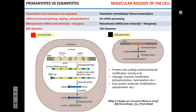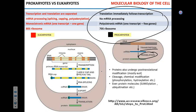In prokaryotes, translation immediately follows transcription — these processes are practically simultaneous. While mRNA is still being synthesized it's already being translated. This is possible because there is no physical boundary between the DNA and the ribosomes, and since there is no processing of mRNA — no splicing, no polyadenylation — mRNA is ready to go.